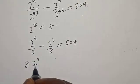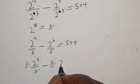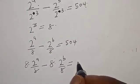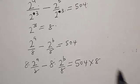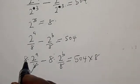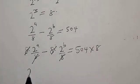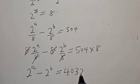Multiplying both sides by 8, we have 2 raised to power a minus 2 raised to power b equal to 5/4 multiplied by 8, which gives us 2 raised to power a minus 2 raised to power b equal to 4032.